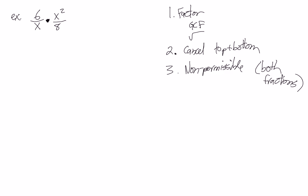Looking at this first example, we can't do any factoring — it's factored as much as possible, so we're ready to cancel. We can cancel an X on the bottom with one of the X's on the top, leaving just an X on top. Out of the 6 and 8, we can divide them both by 2, giving us a 3 and a 4. So our final answer is 3 and X on top and just a 4 on the bottom.